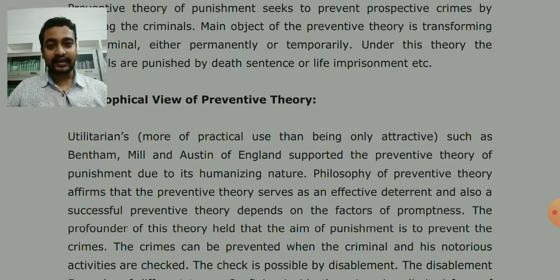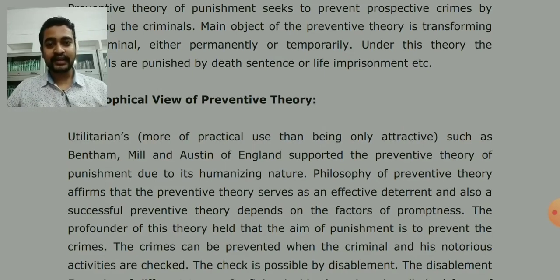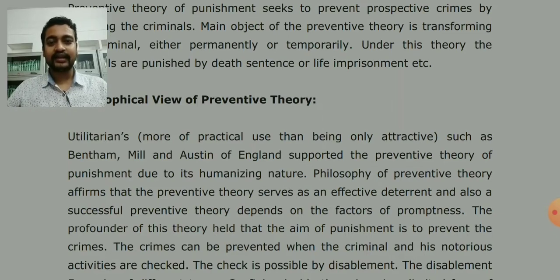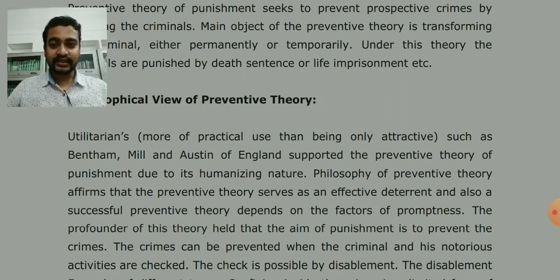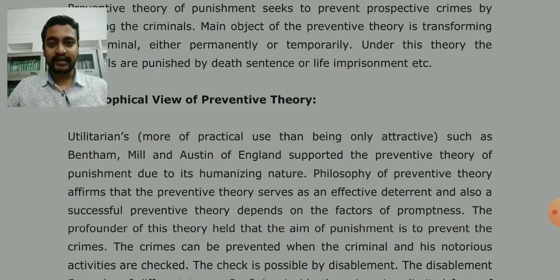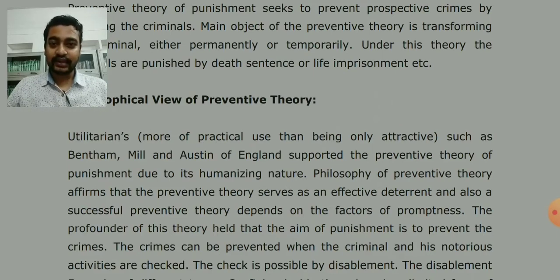If we take a criminal and put them in jail, any other person who sees that this person committed a particular crime and was punished by being removed from society — separated to a different place where they can't meet anyone, living alone among other criminals — then that person will be transformed. There can be permanent suppression or temporary preventive measures. The general public will also develop a fear that if they commit a crime, under the preventive theory they will also be separated, put in jail. An example is set, and fear is generated. So preventive theory serves as an effective deterrent.